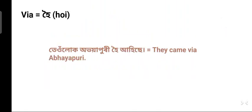Next: 'via' in Assamese — 'হৈ' (hoi). 'Hoi' does not follow any grammatical suffixes; just 'hoi' is added. Example: 'Teolokhey Abhayapuri hoi ahise' — they came via Abhayapuri. 'Teo' is the honorific third-person singular and 'teolok' is the honorific third-person plural, meaning they. Abhayapuri is a city in western Assam.